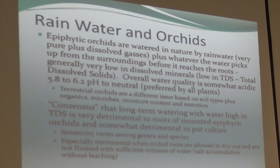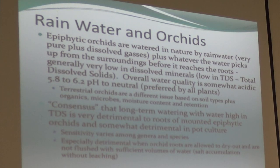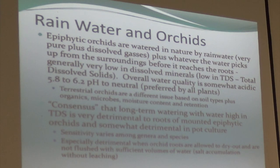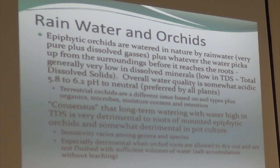Orchids in general like to have a pH almost between 5.8 to 6.2, and most plants like it a little bit more acidic than alkaline. What happens with our water here in Southern California is it comes from very long distances. It travels along aqueducts, picks up minerals, gets dumped into our reservoirs, spends more time picking up minerals, and by the time we get it out of our faucet, it has absorbed a lot of those minerals.